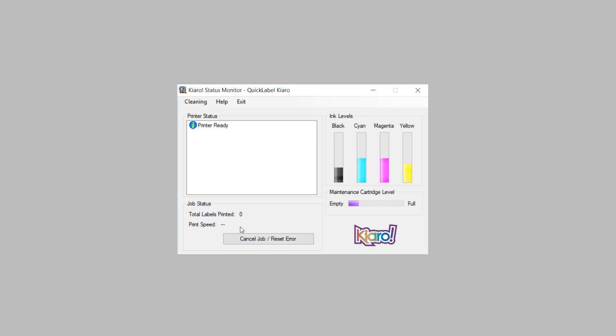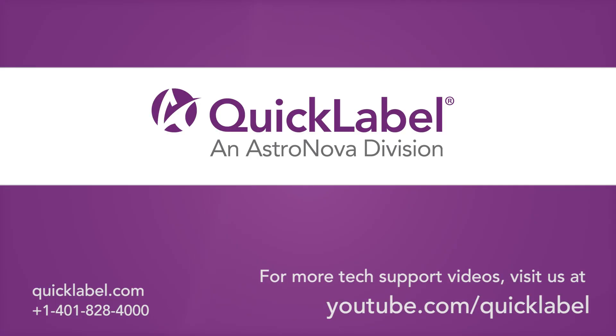The Kiaro status monitor, which can be launched from your Quick Label Kiaro folder, should indicate that there are no problems. For more tech support tutorials, visit youtube.com slash quicklabel.